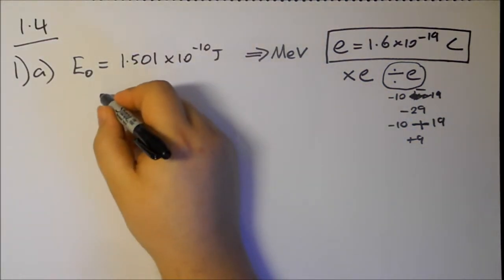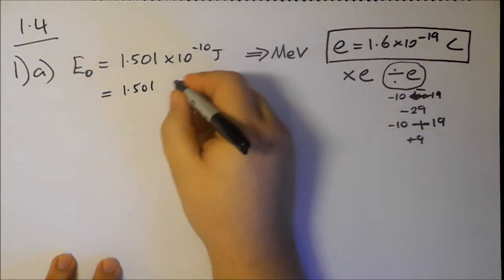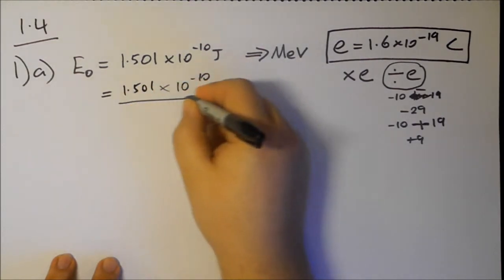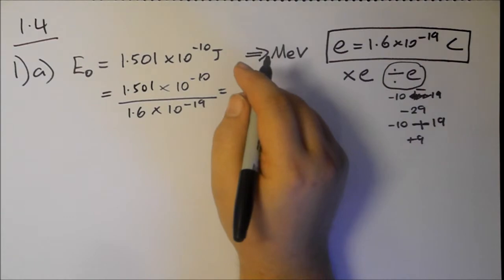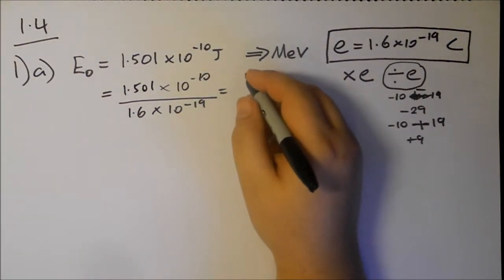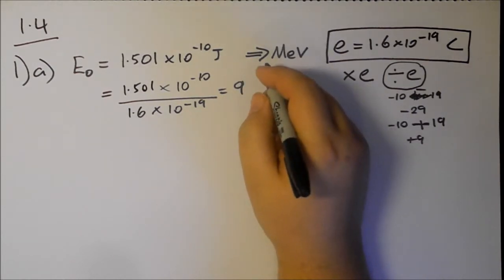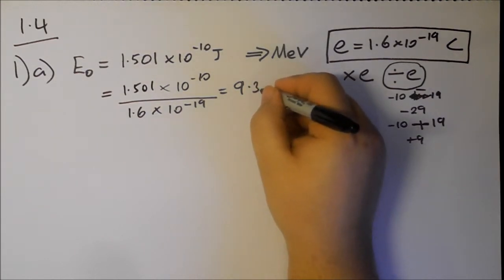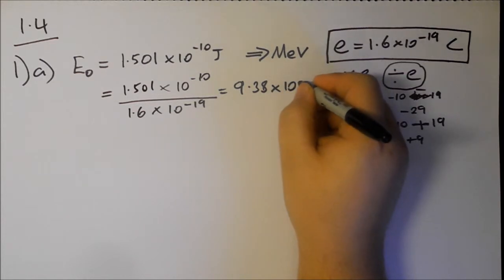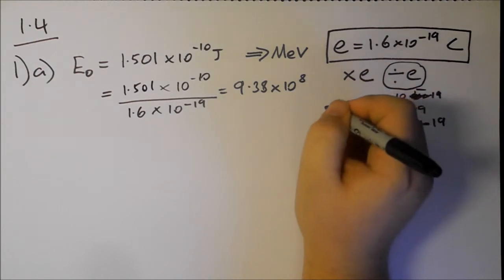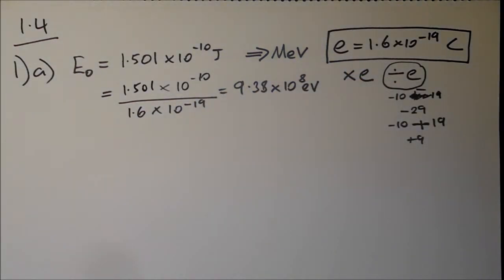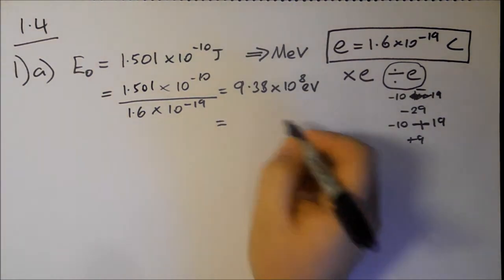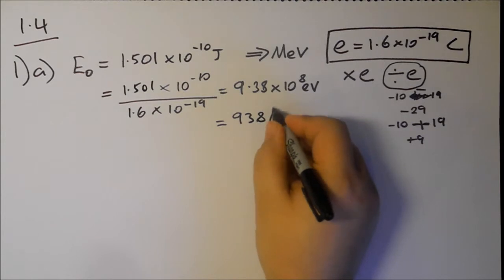I'm going to take 1.501 times 10 to the minus 10, divide by 1.6 times 10 to the minus 19, and I'll get, in standard form, 9.38 times 10 to the 8 eV, which means we can convert that to 9.38 MeV.